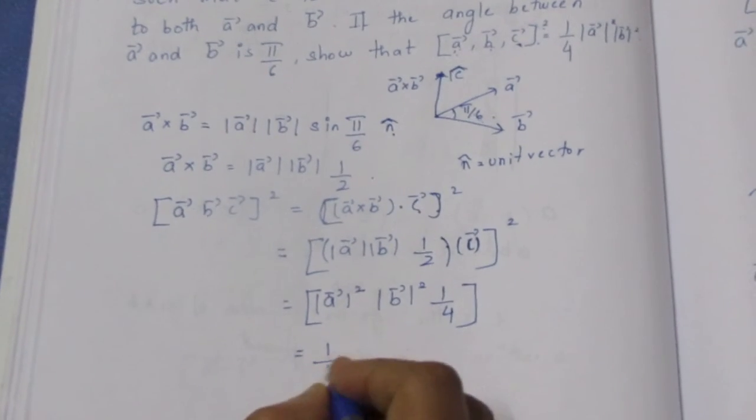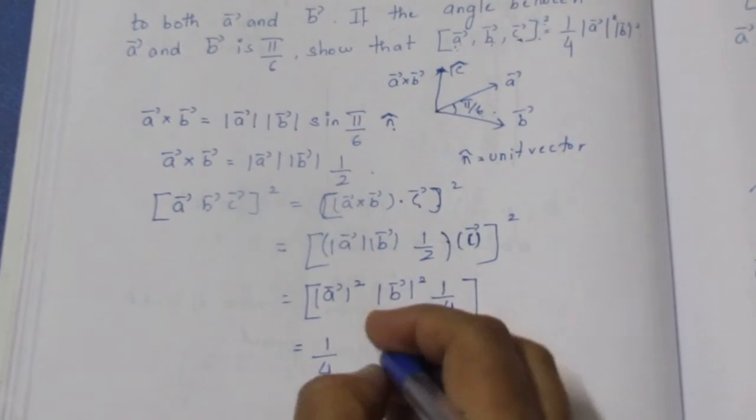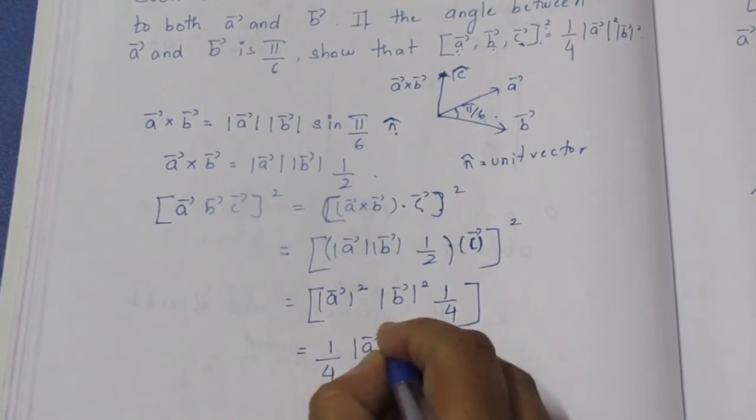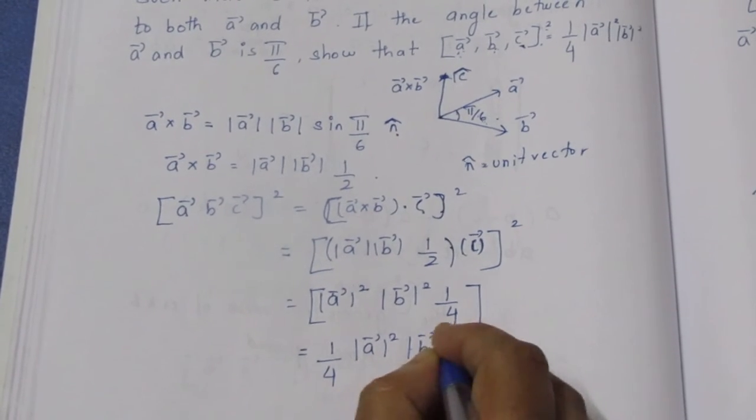The final result is 1/4 times modulus of a vector squared times modulus of b vector squared, which is what we needed to show.